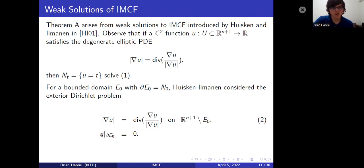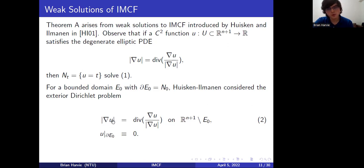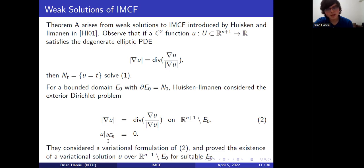So Huisken and Ilmanen said this would give you a global solution of inverse mean curvature flow over the exterior region. We know in general that global solutions don't always exist — finite time singularities in inverse mean curvature flow do happen sometimes. So let's consider a weak formulation of this problem. This is a level set approach very similar to the level set approach for mean curvature flow. They considered a variational formulation and were able to prove the existence of variational solutions over the exterior region for very general choices of domains E₀.